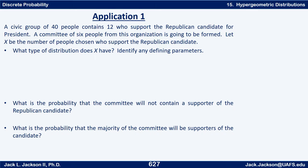A civic group of 40 people contains 12 people who support the Republican candidate for president. A committee of six people from this organization is going to be formed. Let X be the number of people chosen who support the Republican candidate. We need to answer these questions: What type of distribution does X have and identify any defining parameters? What is the probability the committee will not contain a supporter of the Republican candidate, and what is the probability that the majority of the committee will be supporters of the candidate? See if you can work this out and come back when you think you have some answers.